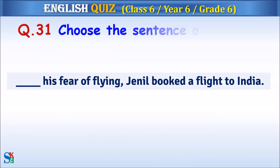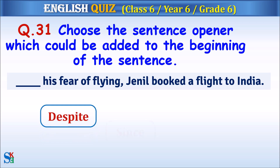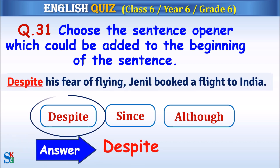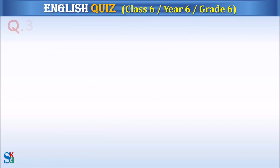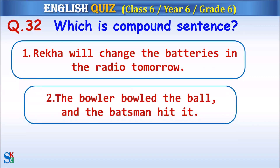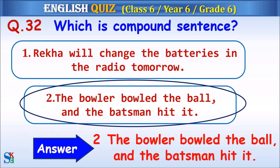Question 31: Choose the sentence opener which could be added to the beginning of the sentence. The answer is 'despite.' Question 32: Which is a compound sentence? The answer is option 2: 'The bowler bowled the ball and the batsman hit it.'